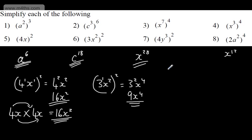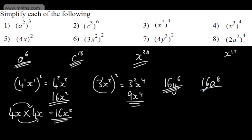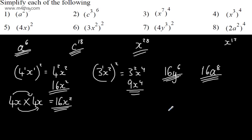This one gives us 16 — that's 4 squared — and then y to the power of 6. If I do 2 to the power of 4, that gives me 16. a to the power of 2 raised to the power of 4 gives a to the power of 8. Let's do another one: 2 to the power of 3, then p to the power of minus 1, and q to the power of 0, all raised to the power of 4.